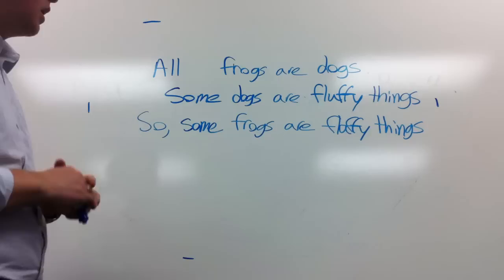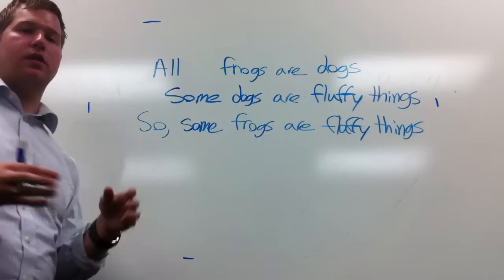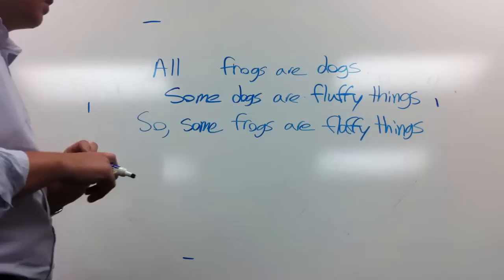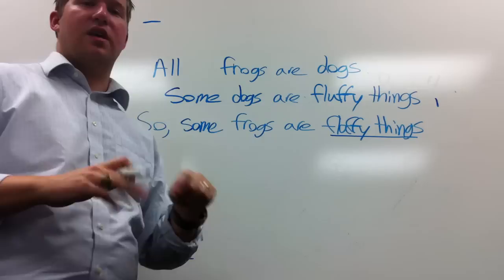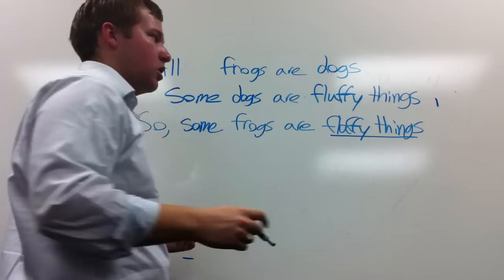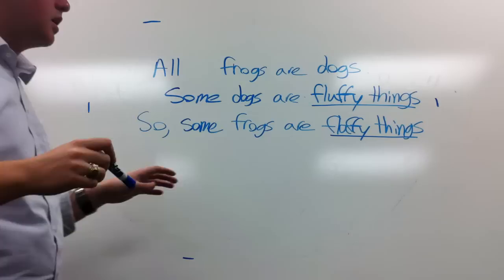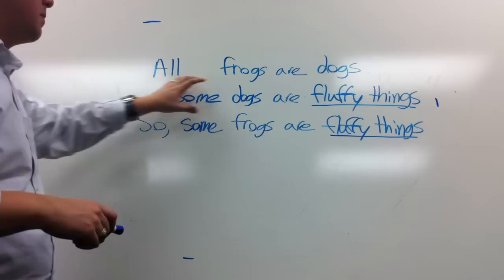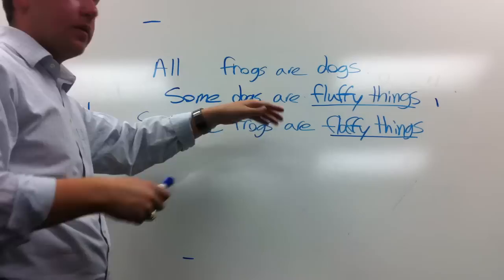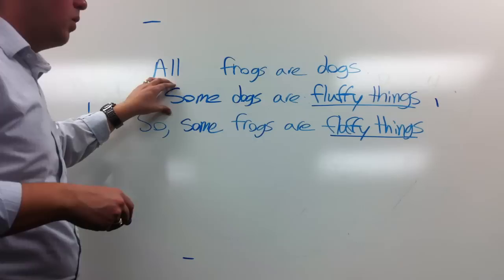The second thing we do is make a 'minor term sandwich.' To do that you need to know which is the minor term and which is the major term. The major term is always the last term in the conclusion. Here, 'fluffy things' is the last term in the conclusion, so it's the major term. The premise that contains the major term is the major premise.